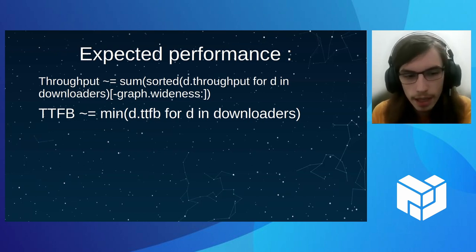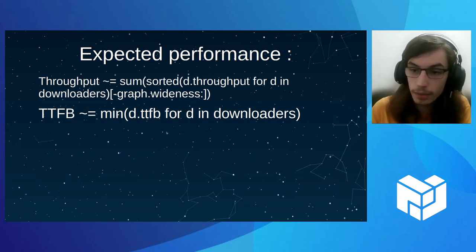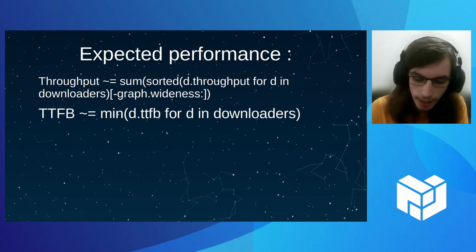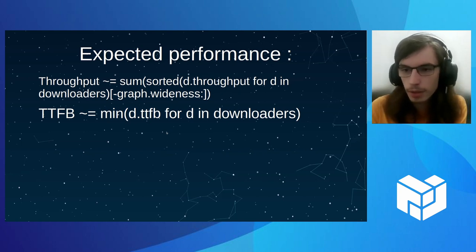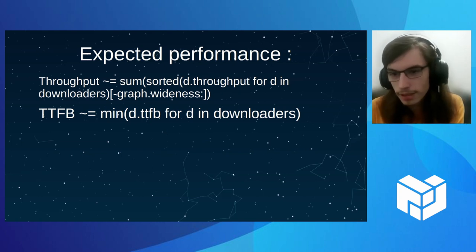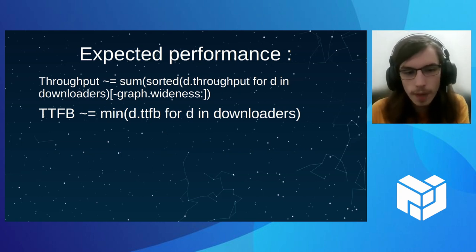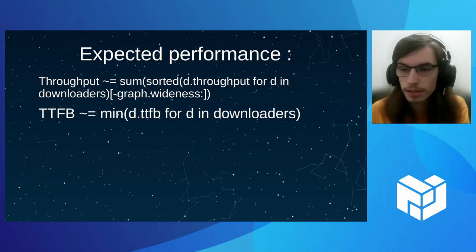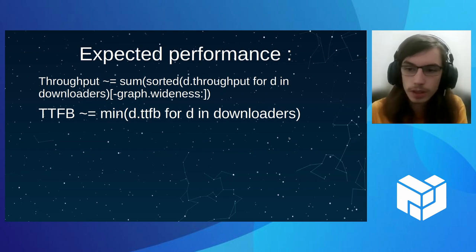For time to first byte: at the start we don't have any peers — we only know one block. So what Rapid does is download the same block from everyone, because it has nothing better to do. So the time to first byte is the minimum across all the downloaders, which is still quite good. It's not incredible, but it's still quite good if you have multiple gateways, as it can load-balance.